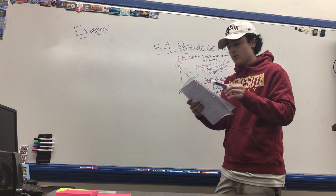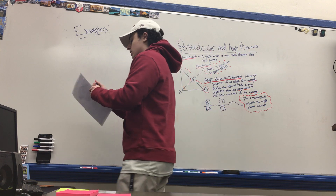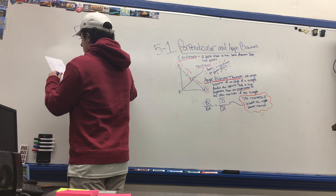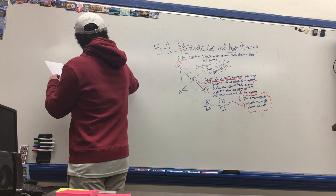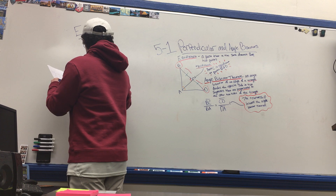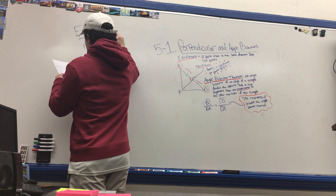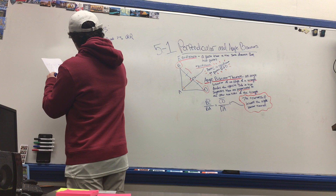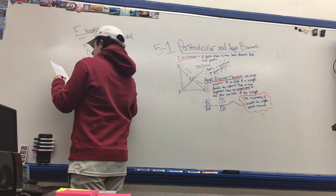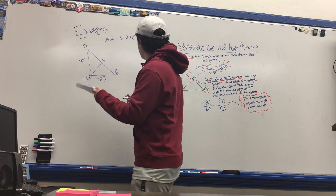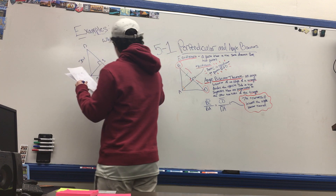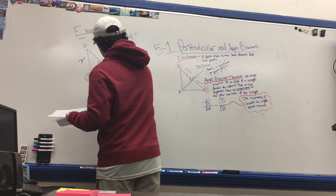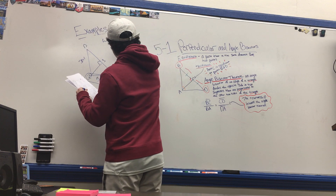For example 3, we draw another triangle. We are looking for QR. The expressions given are 3n minus 1 and 5n minus 7, and there is a right angle marked on the triangle. We identify QR on the diagram and set up our equation.